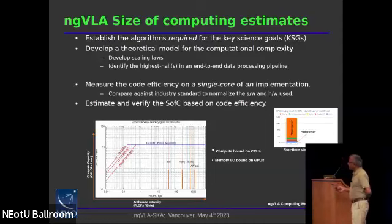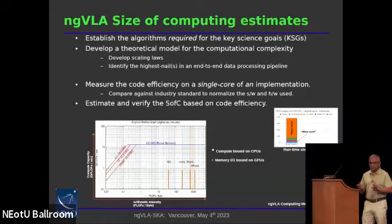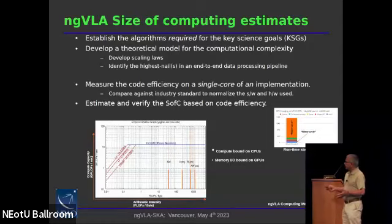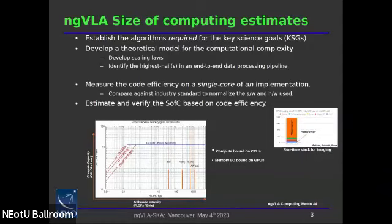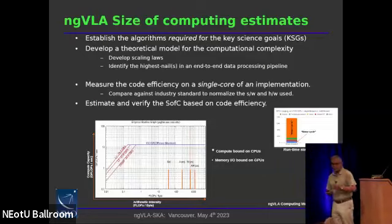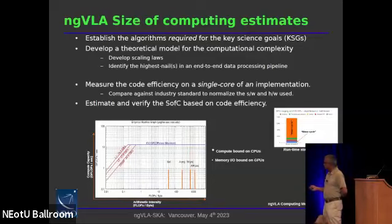The process we follow — details are in the memo — is that we took the KSTs and converted them to the algorithms needed, so we could develop theoretical scaling laws for the computing needed. Those scaling laws have coefficients we measured by running actual code. One unsurprising result is that in an end-to-end imaging pipeline, the dominant computing cost comes from the imaging step, and specifically the major cycle, which consumes 90 percent of the computing load.